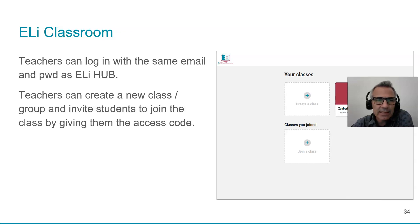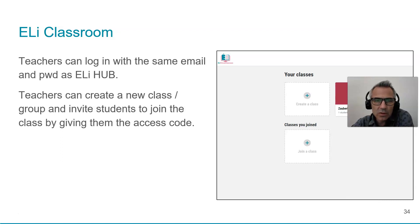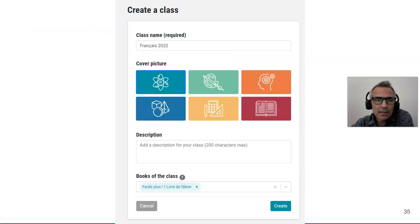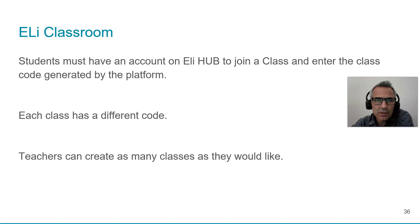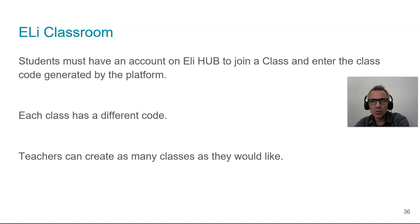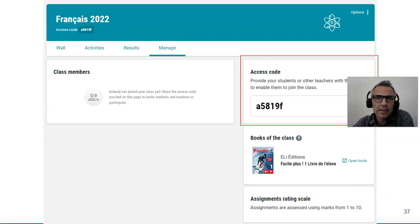To create a class: teachers log in with their same email, go to the classroom tab, and click 'Create a Class'. It's very simple — you do that, receive a code, and share that code with your students. Every class has a different code, so if you're a teacher with eight classes, each will have its own code. Students need an account on ELI Hub to join a class. Once you've created the class, you get an access code — for example, 5819F — which is then shared with pupils.